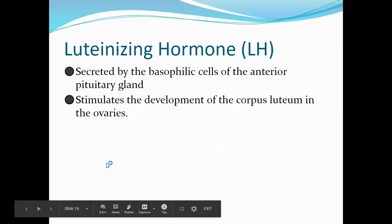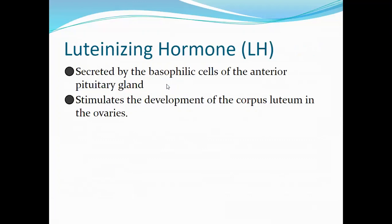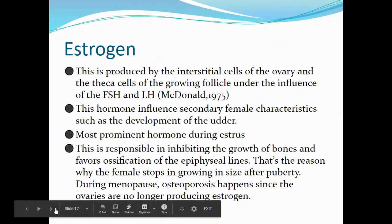The luteinizing hormone is also secreted by the basophilic cells of the anterior pituitary gland and stimulates the development of the corpus luteum in the ovaries. The corpus luteum is the remaining scar tissue once the ovum or oocyte is released — the follicle left behind becomes scar tissue. Estrogen is produced by the interstitial cells of the ovary and the granulosa cells of the growing follicle under the influence of FSH and LH.